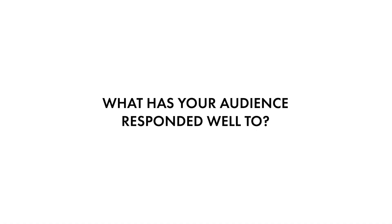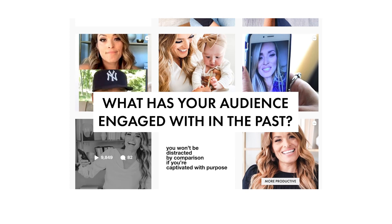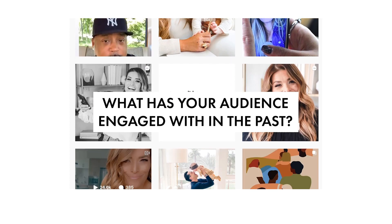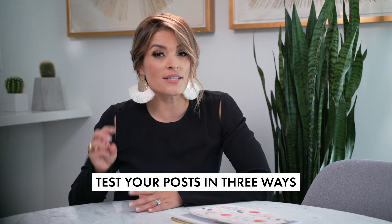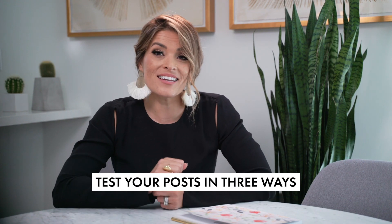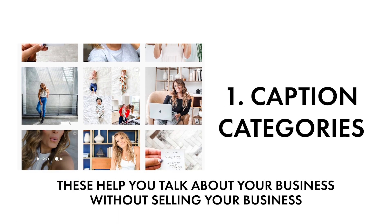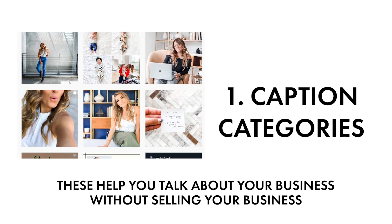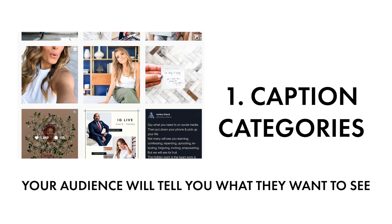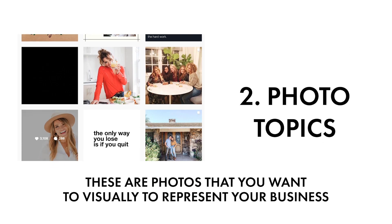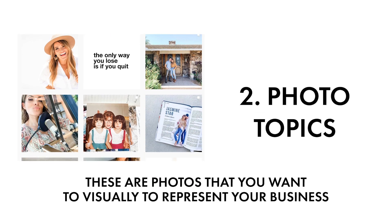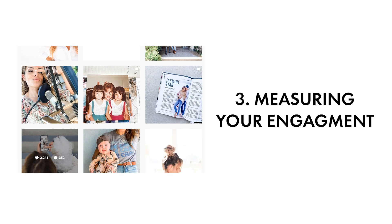The next part of your audit is to measure what your followers have responded well to — basically, what they've engaged with in the past. Then you can test your new posts, and we're going to do this in three ways. Number one: caption categories, which help you talk about your business without selling your business. Number two: photo topics — photos that visually represent your business. And three: measuring your engagement.